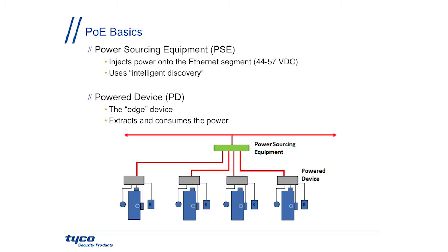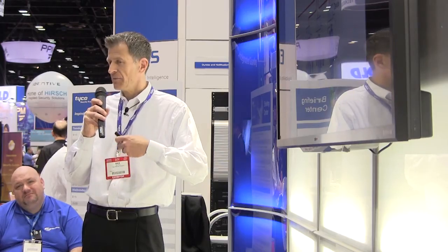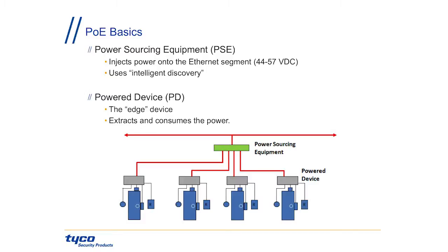There are basically two parts to PoE. If you're a Red Sox fan or Cubs fan, we'll use a baseball analogy: you've got a pitcher and a catcher. The pitcher in our world is called the Power Sourcing Equipment, or PSE. This device provides the power — usually around 48 volts, maybe up to 50 or 55 volts on the Ethernet cables. It uses intelligent discovery to find out who is at the other end of the cable, because you can't supply power to every device if it can't accept the power. So there's some negotiation before the full power is provided. The accepting device is called the Powered Device, or PD — that's the catcher. This device takes the power, extracts it, steps it down from 48 volts to maybe 12 or 24 volts, what we need for access control applications, and consumes the power.